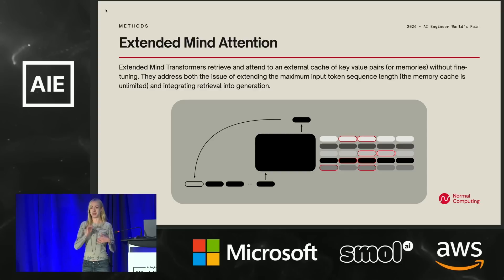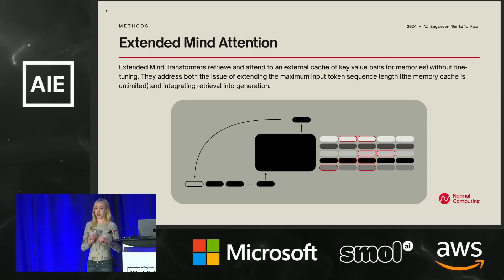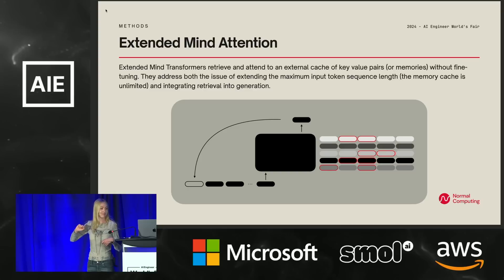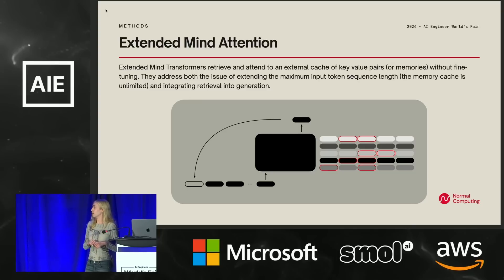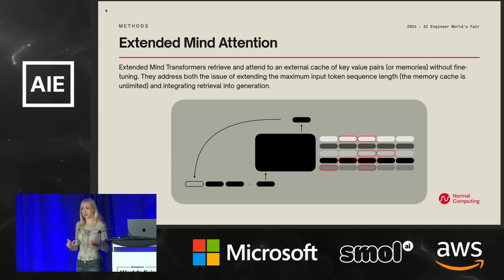We pass all of the memory tokens through the model and save off those key-value representations. Then during generation time, we allow each query token — just like RAG, using cosine similarity — to go retrieve a particular number of those memory tokens and attend to them. In this picture, the red highlighted tokens are meant to represent those retrieved tokens. This ends up being a very simple change to the transformer model. What was difficult was figuring out how to assign position information to those tokens. This work is based on research from a couple of years ago, but they needed to fine-tune their model in order to teach the model how to leverage these retrieved tokens, in large part due to the absolute position embeddings that were popular during that time.